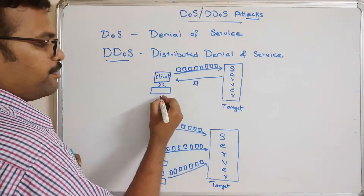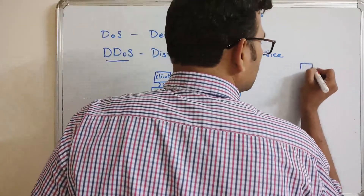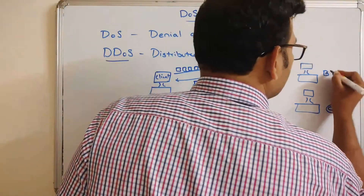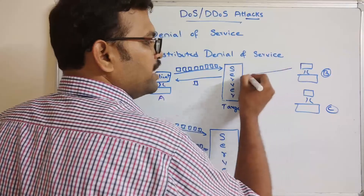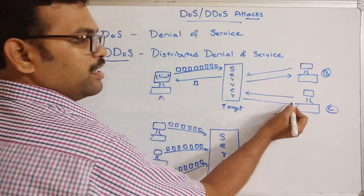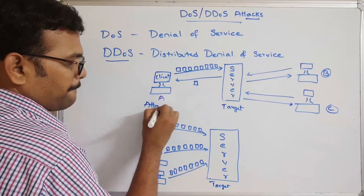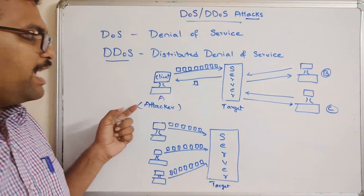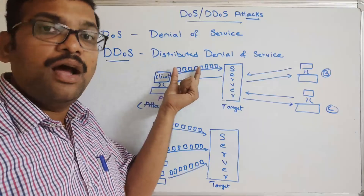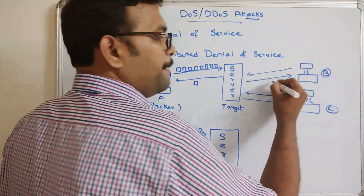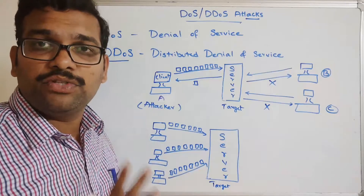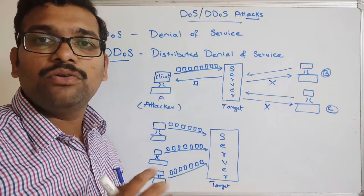Consider systems A, B, and C. System B is sending requests to the server and getting responses. System C is also sending requests and getting responses. System A is the attacker. If the attacker continuously floods the target with traffic — sending more and more requests — the server will not be able to respond to A, B, or C. So B and C are genuine, legitimate users, but they are still not able to get service from the server.